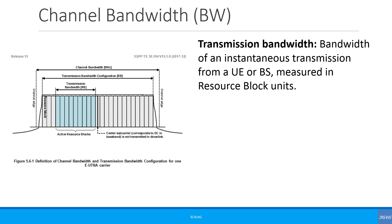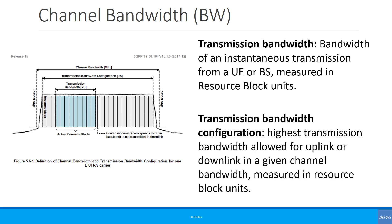We also use the term transmission bandwidth, defined as the bandwidth of an instantaneous transmission from a UE or base station measured in resource block units. The transmission bandwidth configuration is the highest transmission bandwidth allowed for uplink or downlink in a given channel bandwidth, measured in resource blocks. For example, a 20 MHz channel has 100 resource blocks as the transmission bandwidth configuration, while only 40 resource blocks may be in use at any instant, which would be the transmission bandwidth.